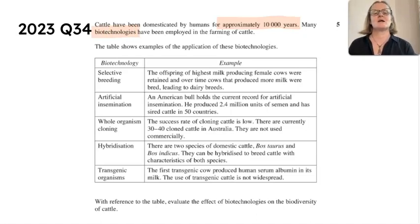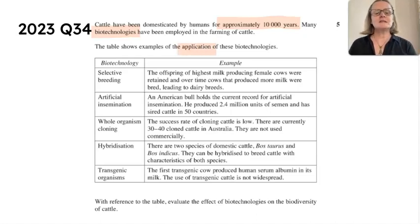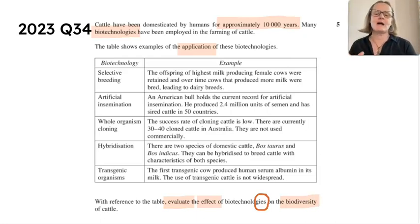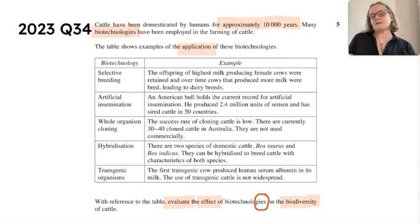This is a Module 6 question. The question asks you to evaluate the effect of biotechnologies — and notice it is plural — on the biodiversity of cattle. So we're looking to say whether biotechnologies have a high, medium, or low impact on the biodiversity of cattle, and we want to talk about more than one biotechnology.